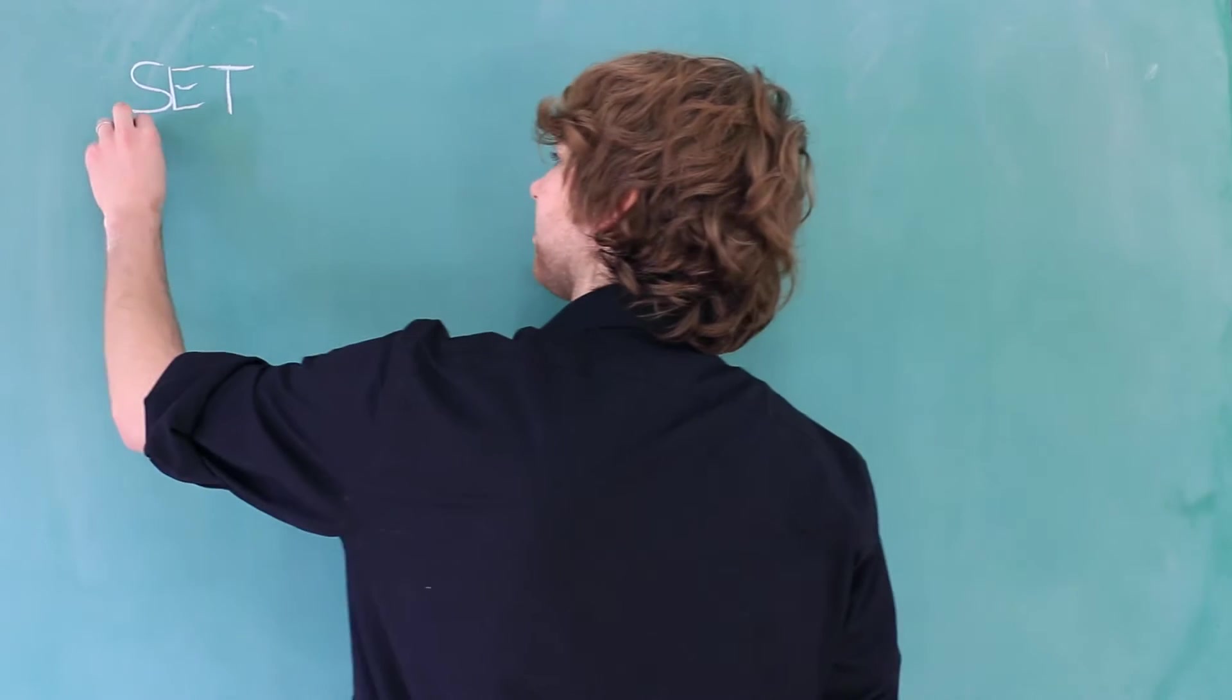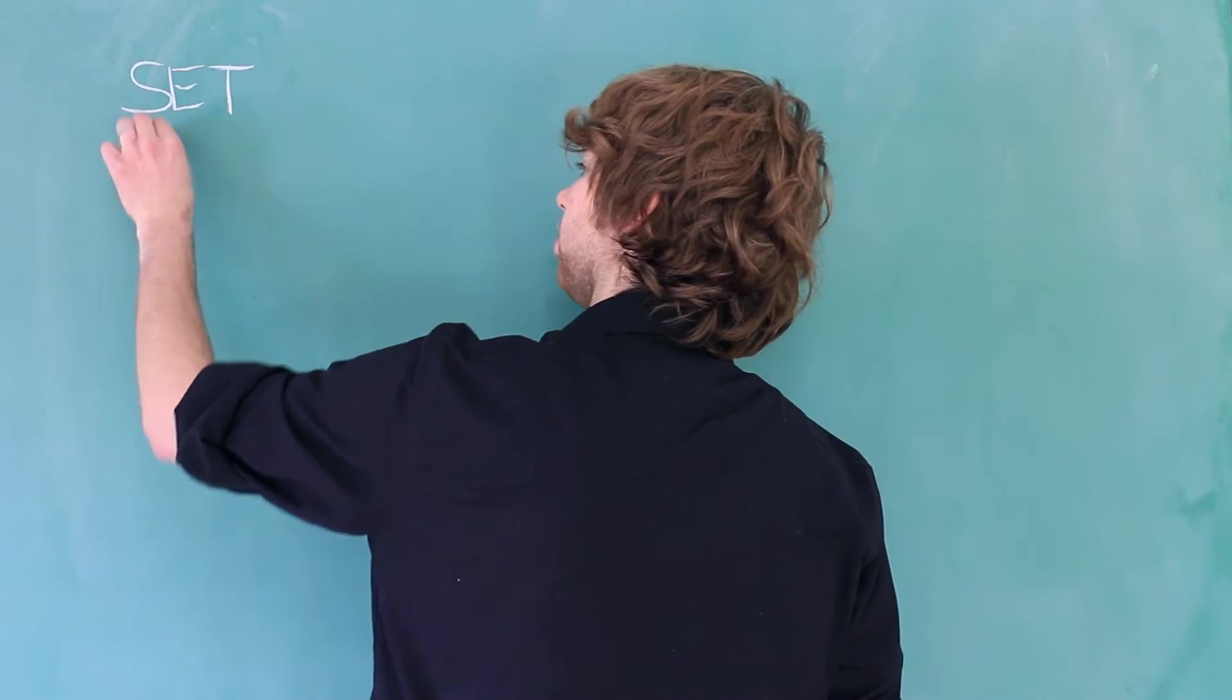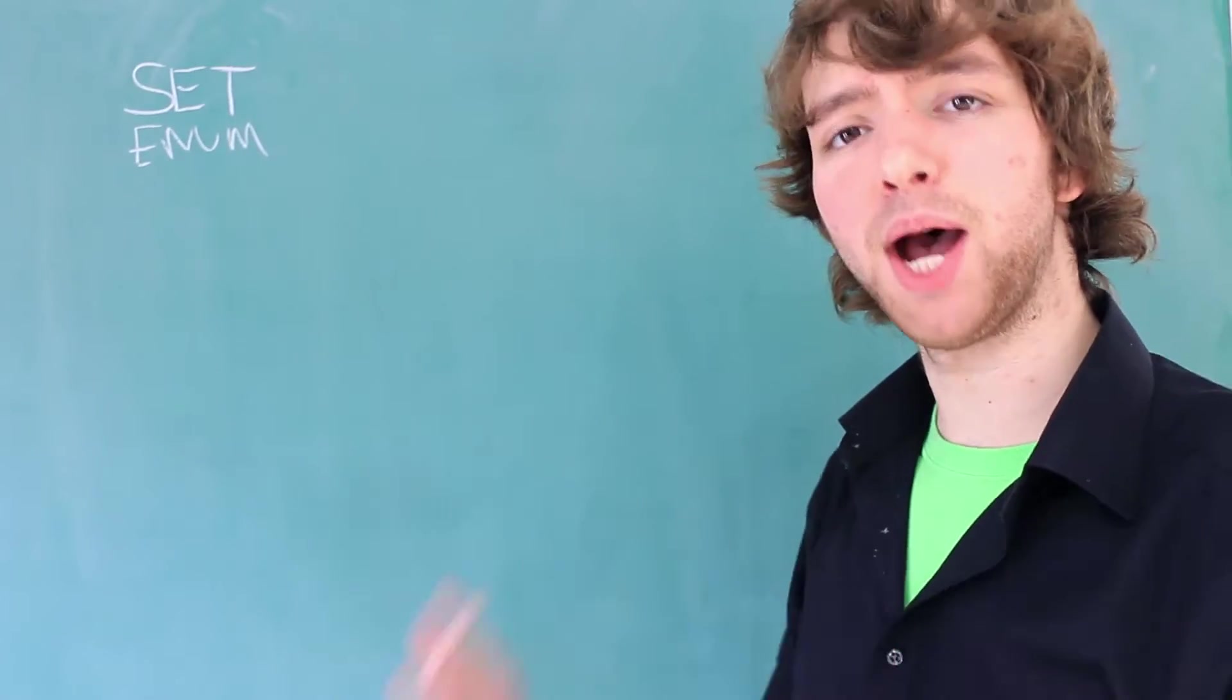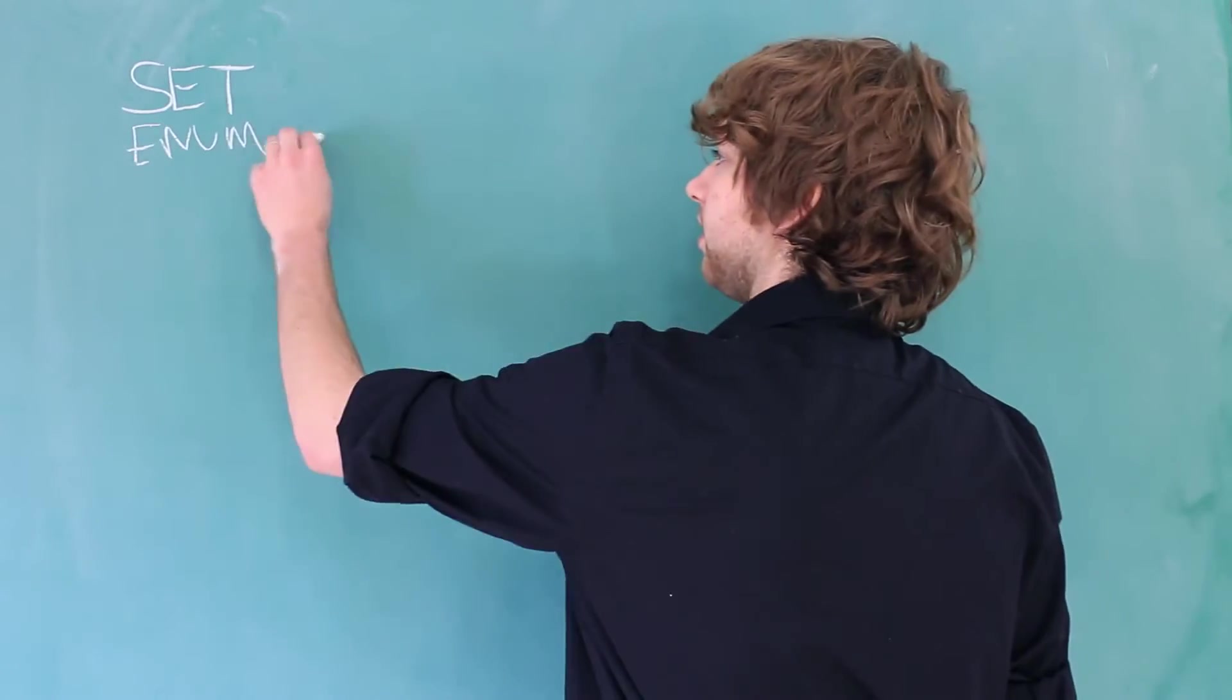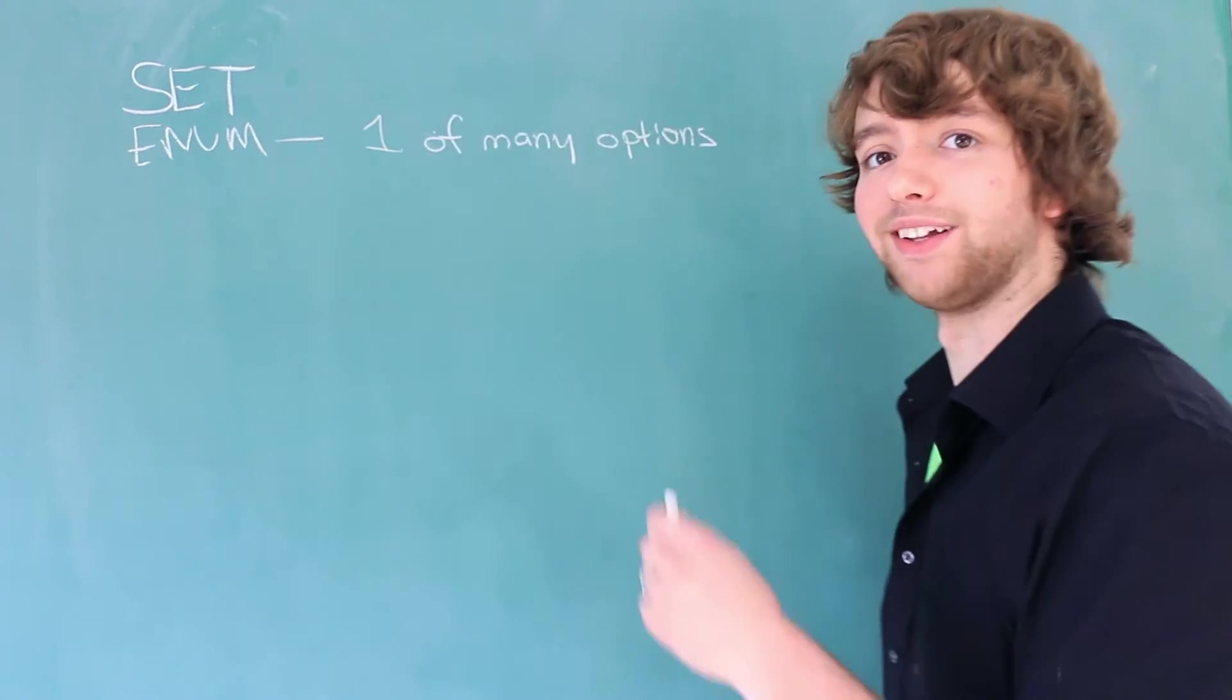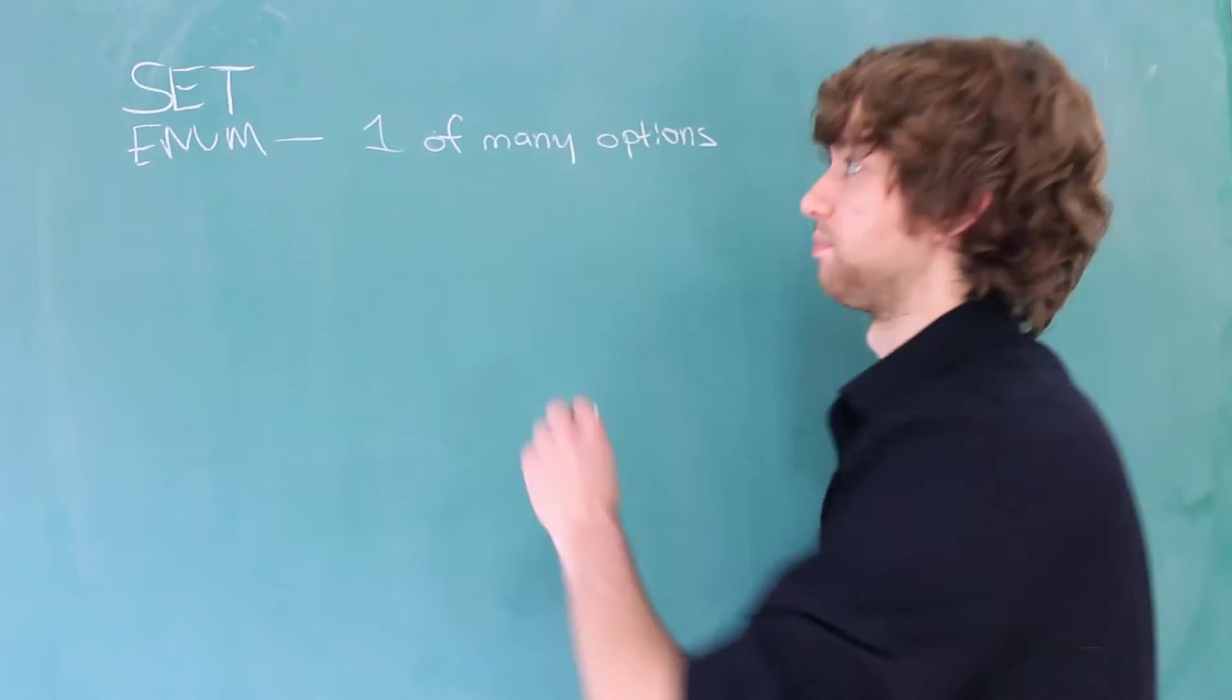So make sure you watch the video over enum. If you have enum figured out, figuring out set is a piece of pie. Looking back at enum, it allows you to pick one of many options. Set on the other hand, allows you to pick many of many options.